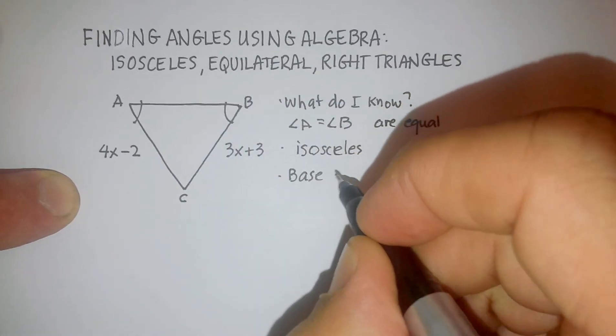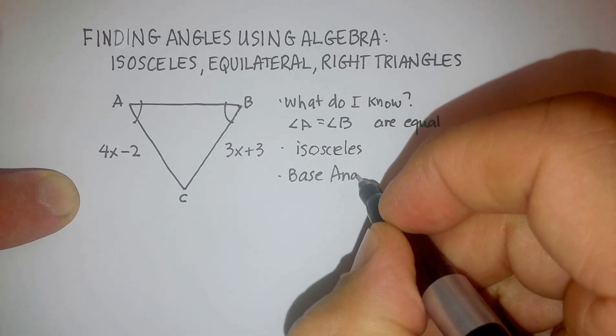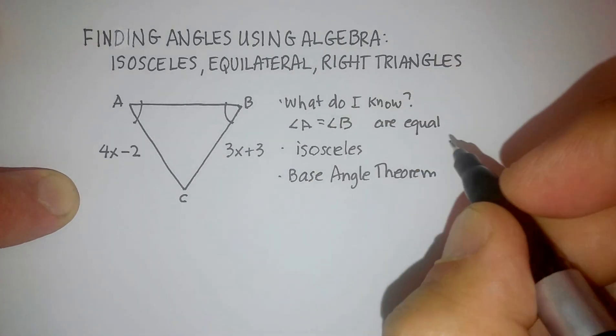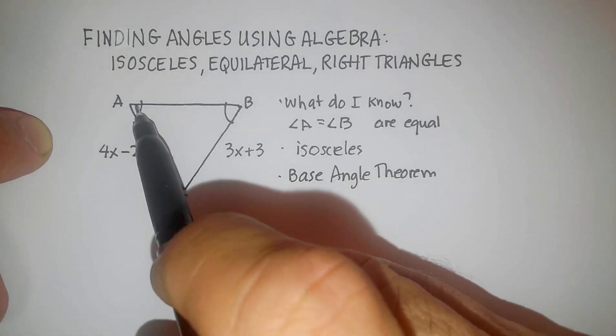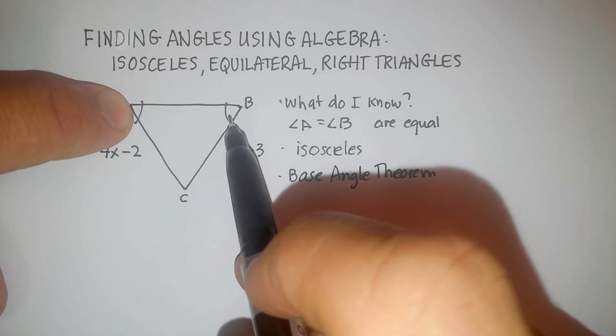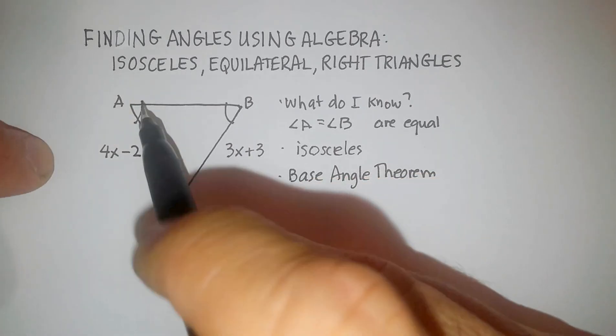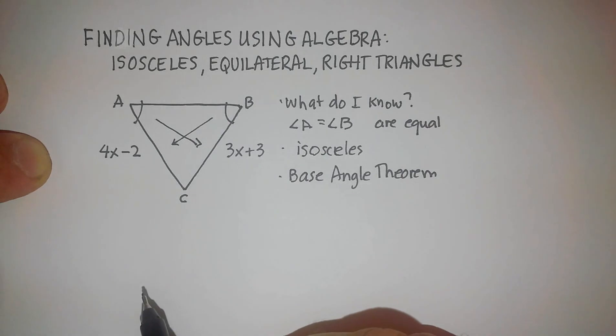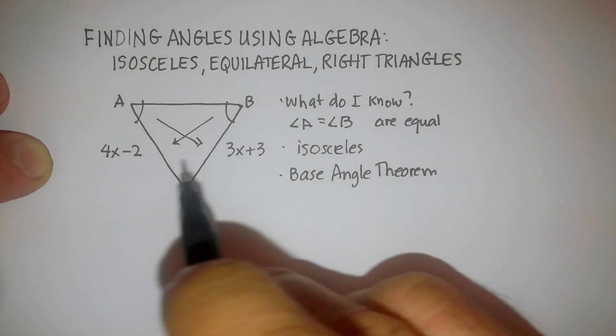And what do I mean by that, base angle theorem? These are all things I know now. I know that the base angle theorem says that if two angles in a triangle are congruent, that means that their opposite sides are also congruent. In this case, they would be equal.